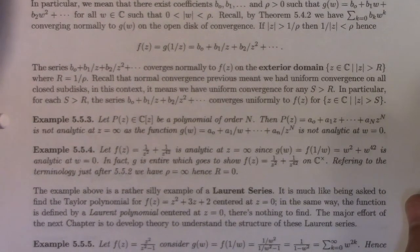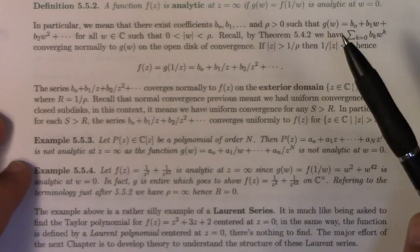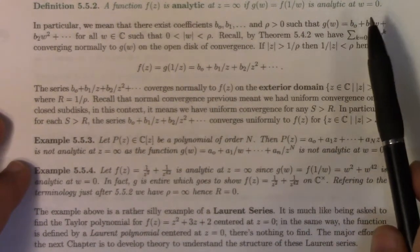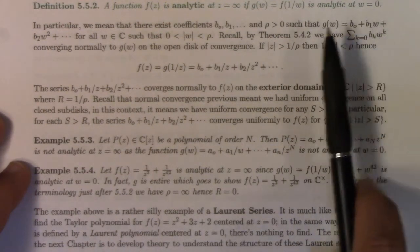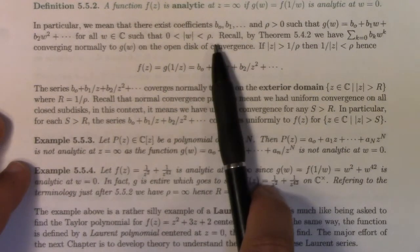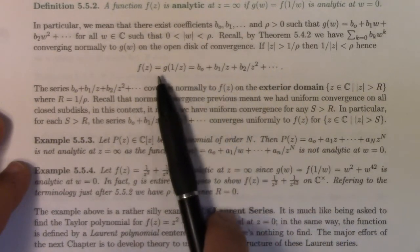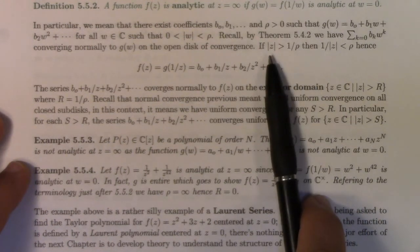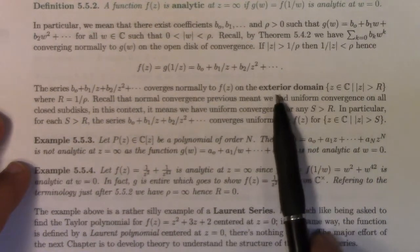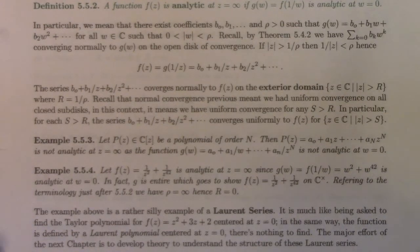Here are some examples. Analytically, analytic at infinity means that there exist coefficients b0, b1, and some radius greater than 0 such that g of W is a power series in W, converging between 0 and rho. If you convert that back to z, that means you have a sum of reciprocal functions — powers of z — and it's good outside some circle. This is what you might call an exterior annulus, or exterior domain. We're going to talk a lot more about these in the next chapter, and I think you've got a homework problem on it.